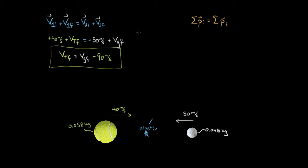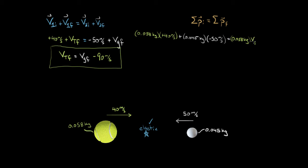The momentum of the tennis ball initially is the mass of the tennis ball, 0.058, times the initial velocity positive 40 — positive because it's directed to the right. Plus the initial momentum of the golf ball: 0.045 times negative 50. Momentum is also a vector, so if velocities are negative you've got to plug them in with their negative sign. That initial momentum should equal the final momentum: 0.058 times VT final, plus 0.045 times VG final.